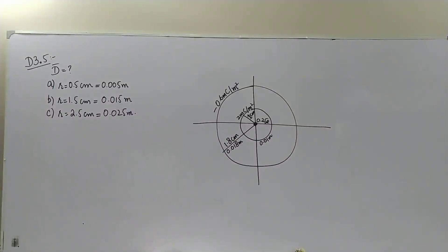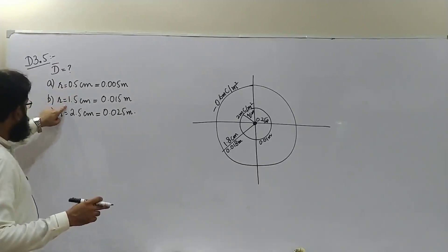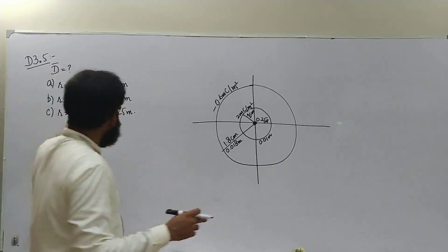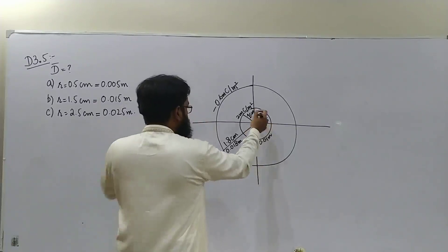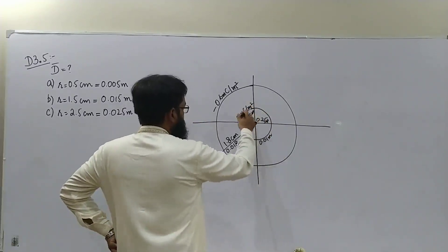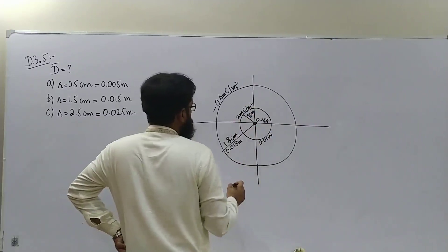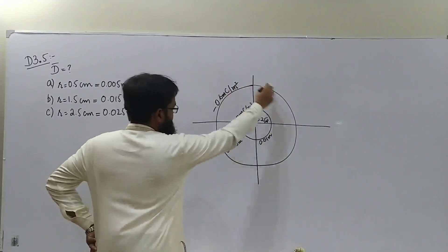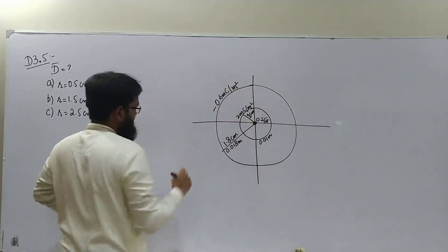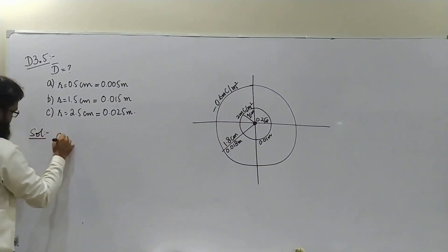In drill problem 3.5, we are asked to find electric flux density on this sphere, beyond this sphere, and at this sphere. The charge distribution given is a 0.25 microcoulomb point charge, a sheet of charge in the form of a sphere of radius 1 centimeter with surface charge density 2 milliCoulombs per meter squared, and another sheet of charge at radius 1.8 centimeters with a negative density.